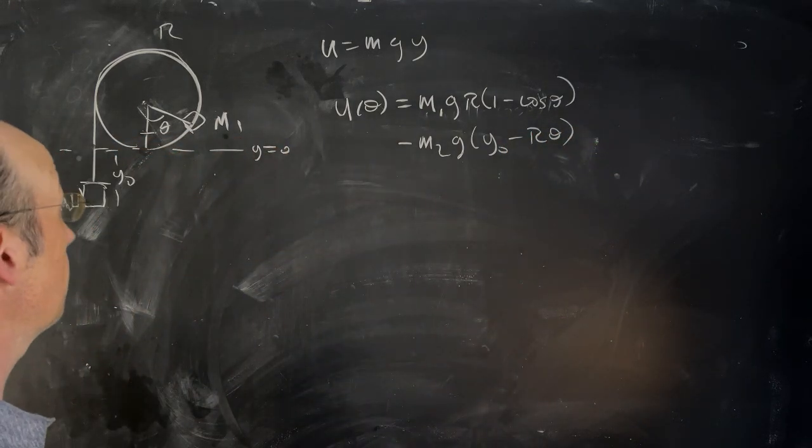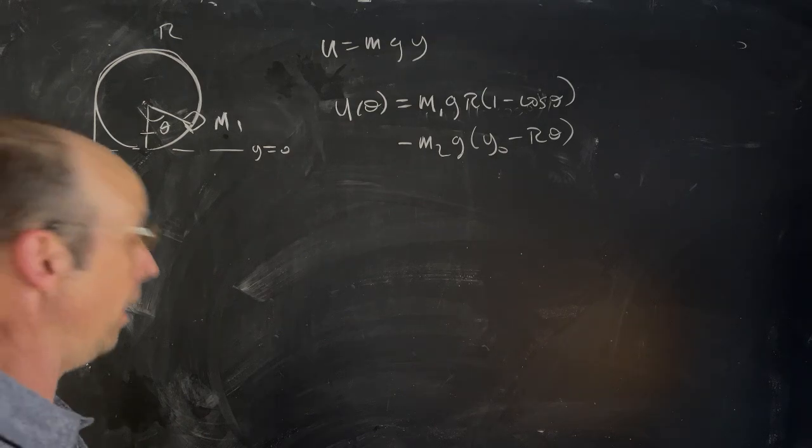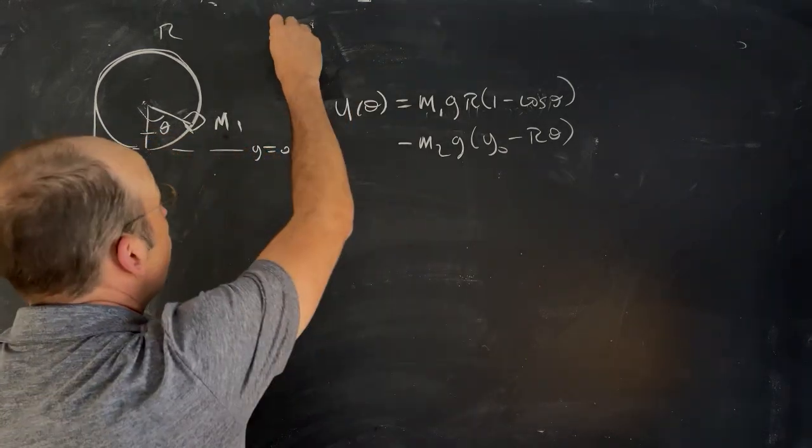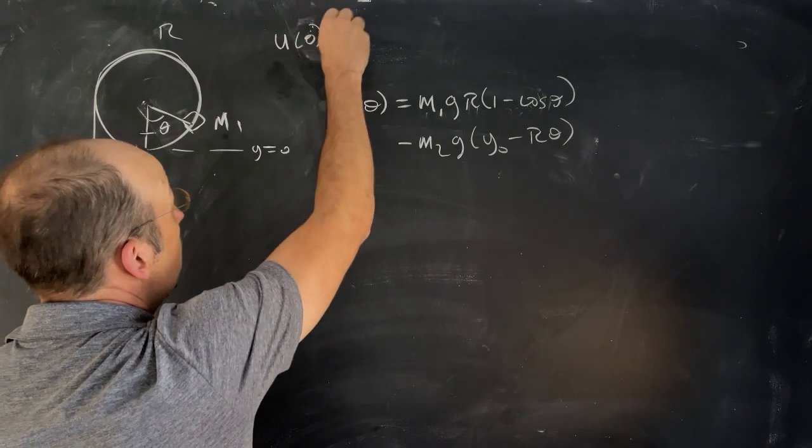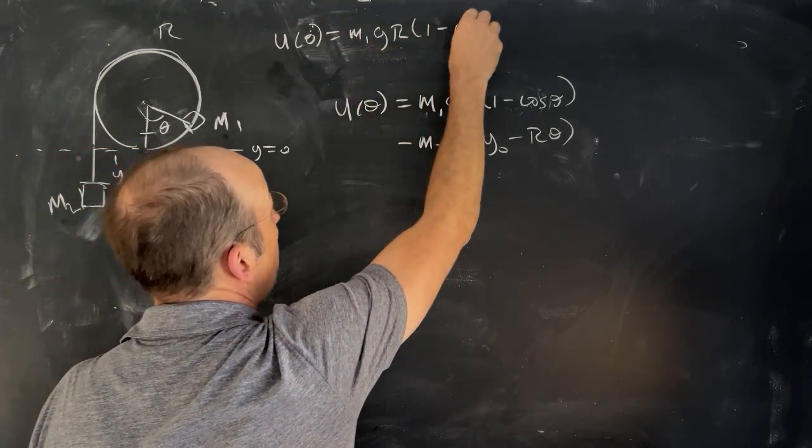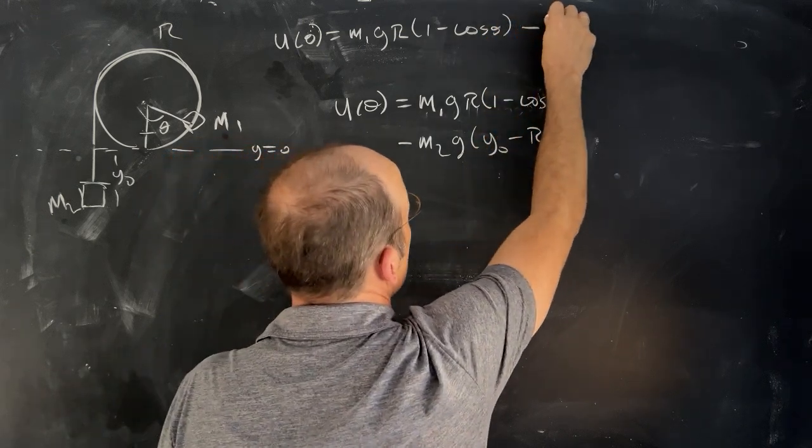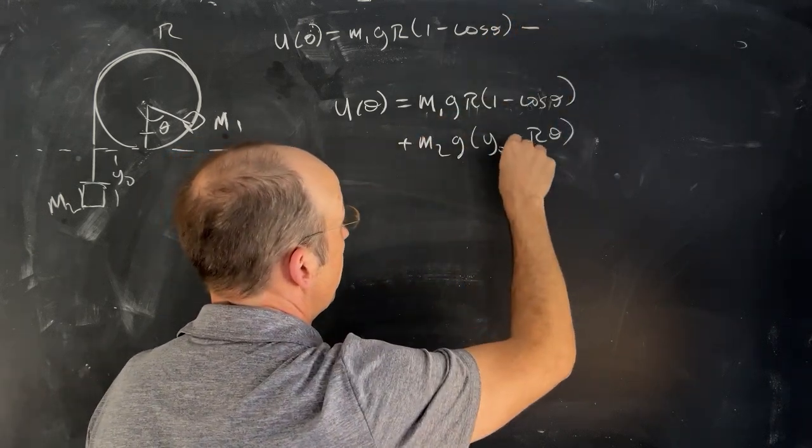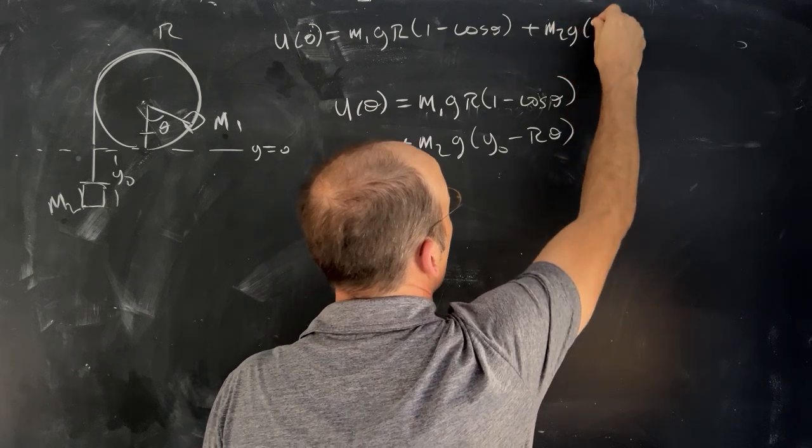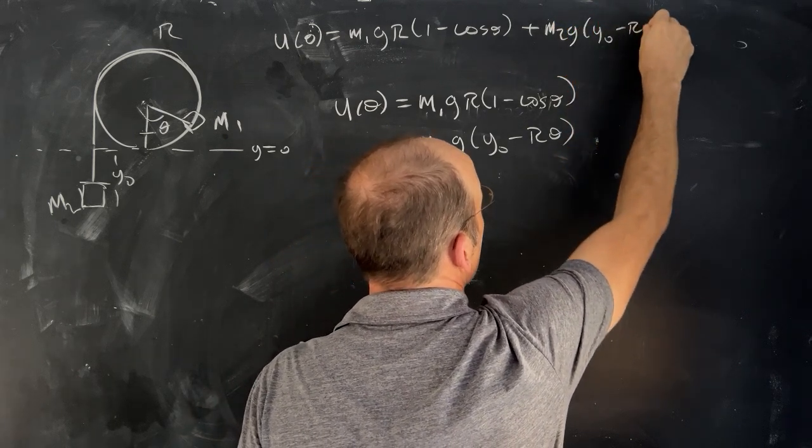So that's my potential energy term. Now just imagine that I plot. I'm going to write it up here a little bit smaller just so I can use it for other stuff. So U of theta is m1 gr 1 minus cosine theta plus m2 g y zero minus R theta. That's my potential energy term.